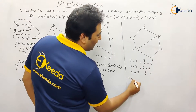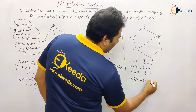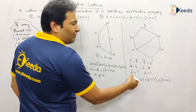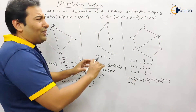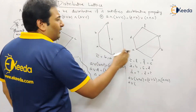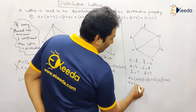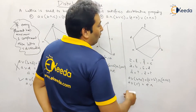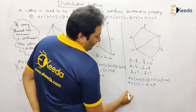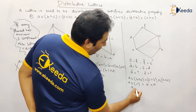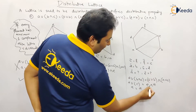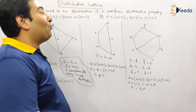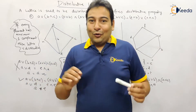Now we can show with any example — let's say a, b, and c. So a join (b meet c) versus (a join b) meet (a join c). b meet c is c. a join b is e. a join c is a. a join c is again a. e meet a is a. This property is satisfied, therefore it is called a distributive lattice. Hope this topic is clear to you.